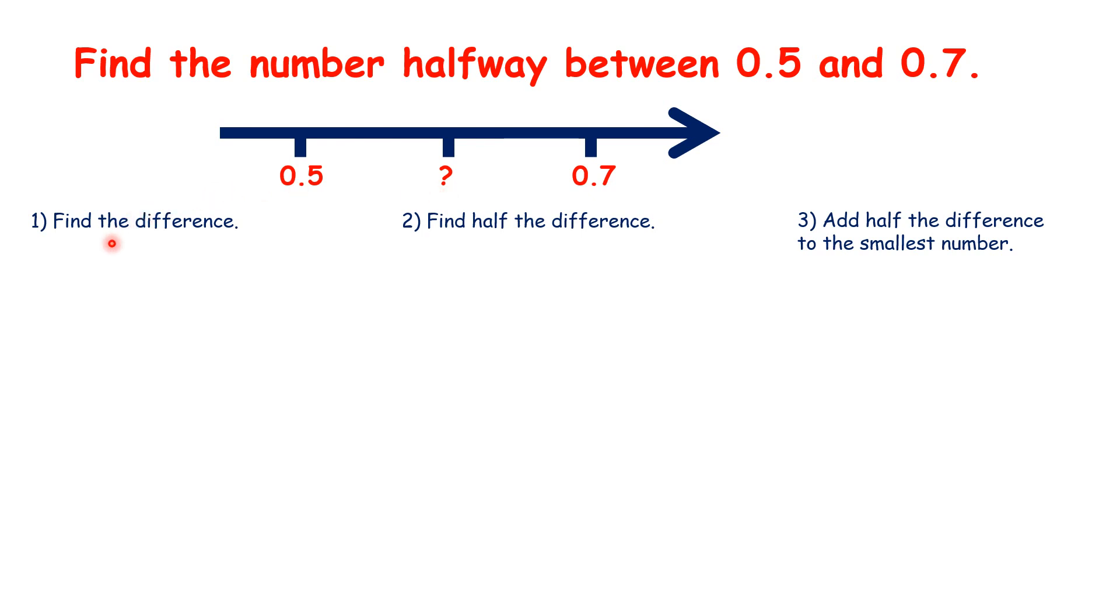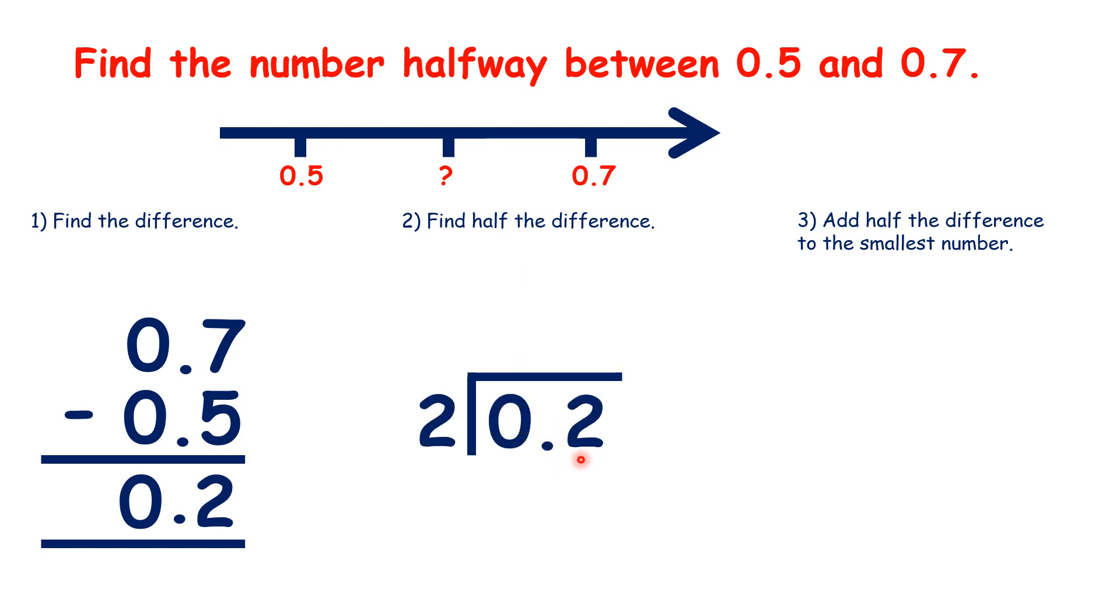So we find the difference, we subtract. 0.7 minus 0.5 is 0.2. Then we find half the difference, so that's 0.2 divided by 2. We need to remember to copy up the decimal point to our answer, then 0 divided by 2 is 0, and then 2 divided by 2 is 1.